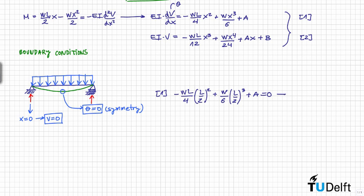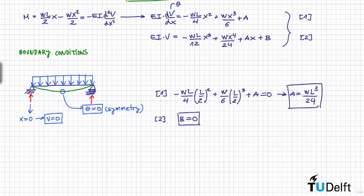Applying the first boundary condition — slope θ equals zero at x = L/2 — to equation one, we find that the constant of integration A is equal to wL³/24. Applying the second boundary condition — deflection equals zero at x = 0 — we find that B is directly equal to zero. Therefore, we can write the final expression for the deflection.